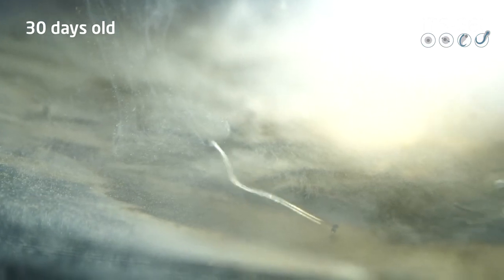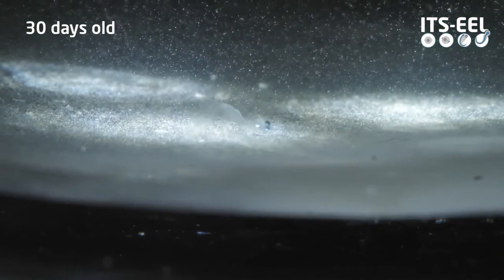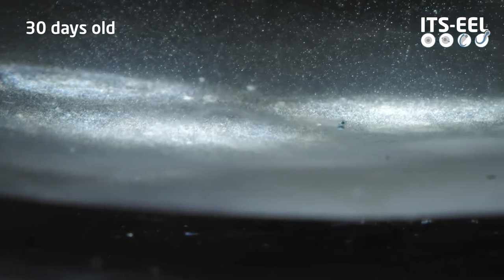After 30 to 40 days, the larvae reach a length of about 10 to 12 millimeters, and here the larval nutrition is crucial for survival. Only larvae that feed and successfully assimilate the food will be able to make it this far.